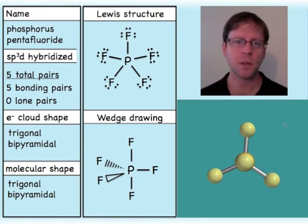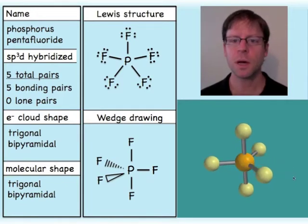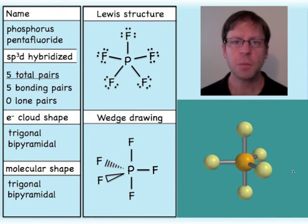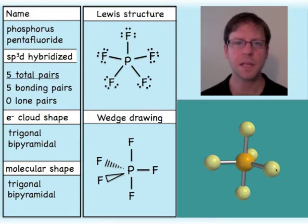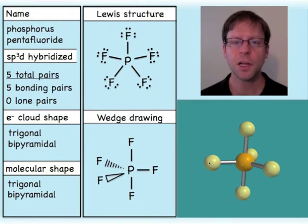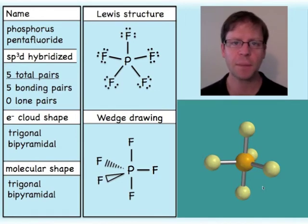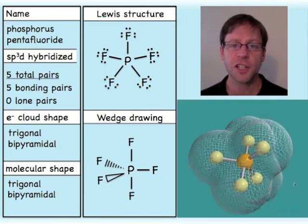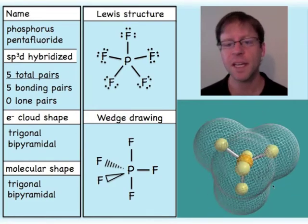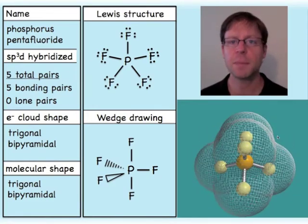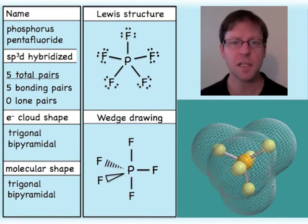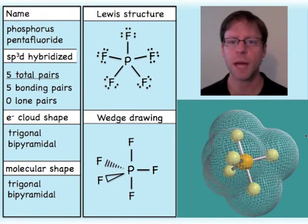That difference in available room will be very important when we start to talk about lone pairs and where they like to hang out. Coming back to this specific molecule, we give it the name trigonal bipyramidal — from the idea that there are three atoms making the base of a pyramid, one on top and one underneath, hence bipyramidal. Because there are no lone pairs, the electron cloud mimics the atoms and is also trigonal bipyramidal.